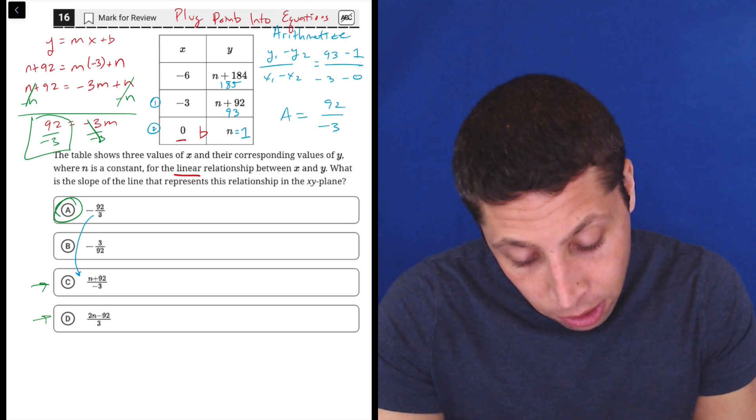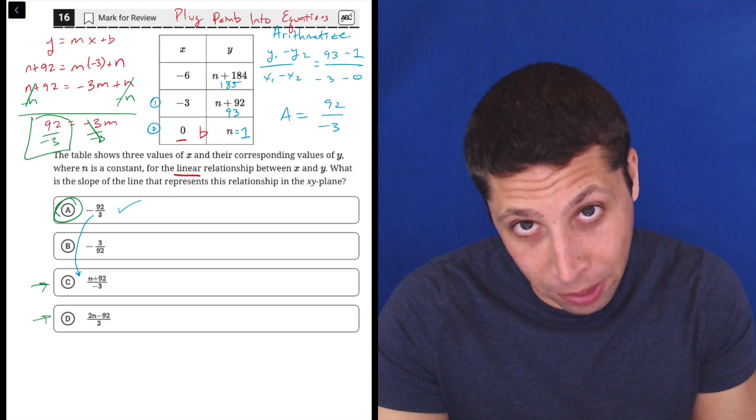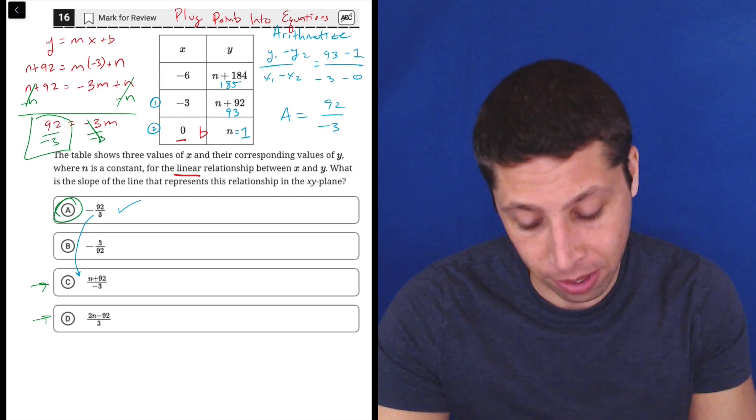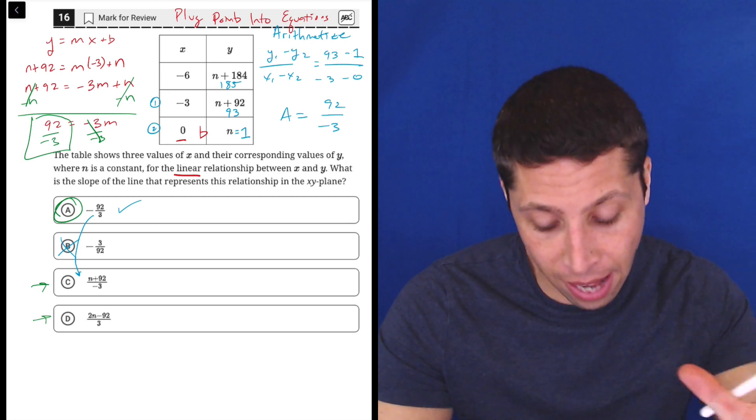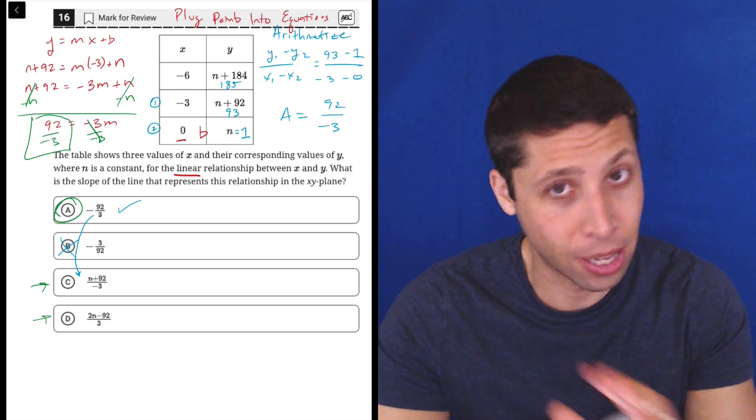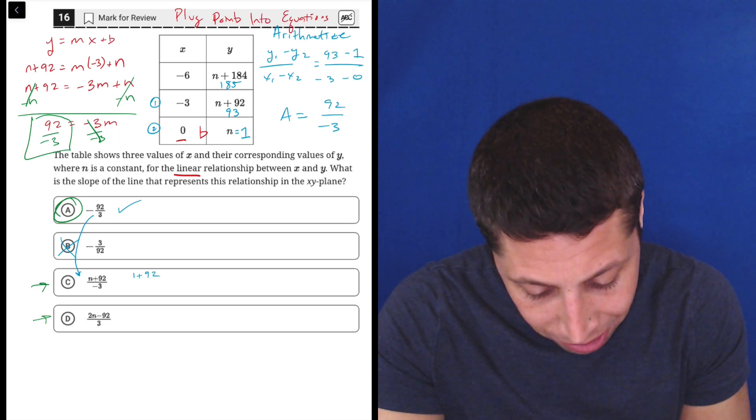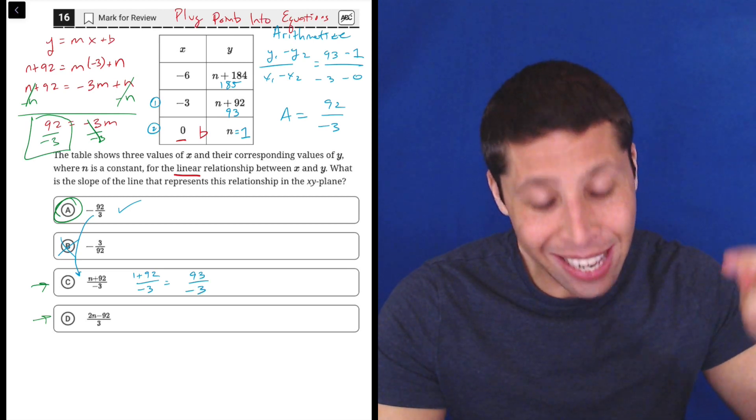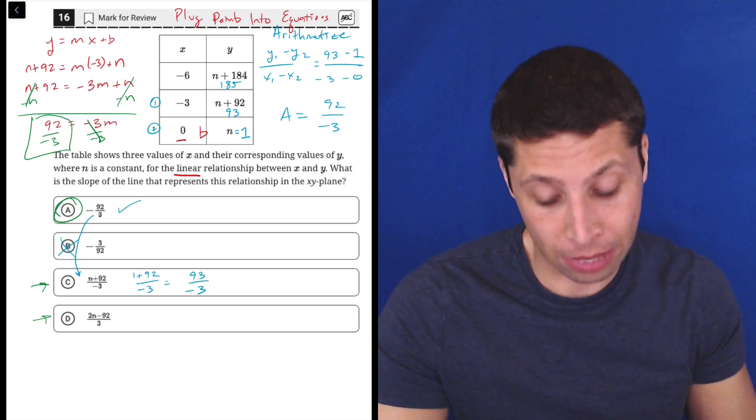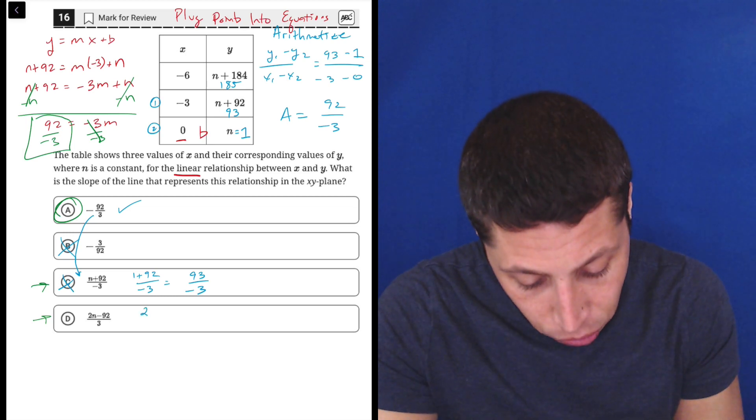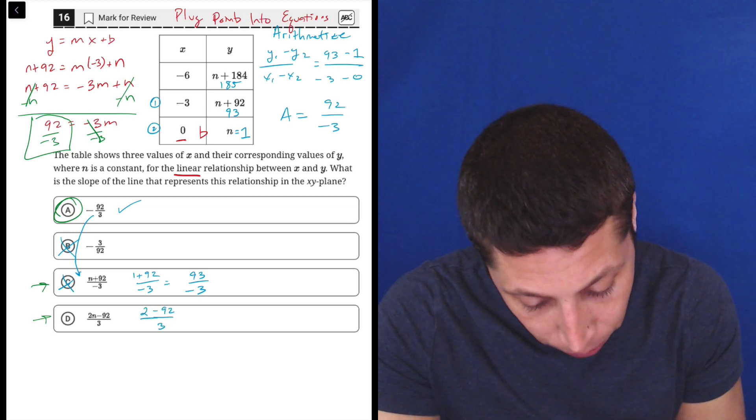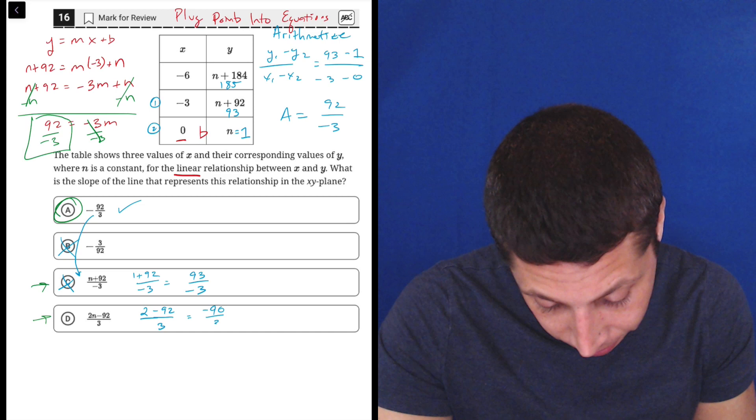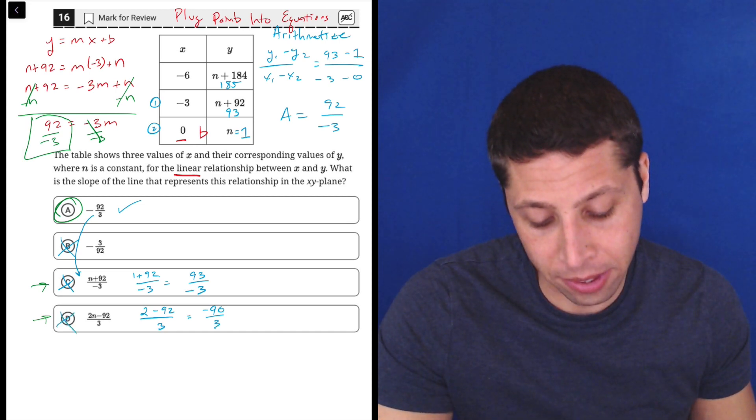Now we would still need to check the other choices and make sure because if we made N 1, then we need to make all the Ns 1, including the Ns and the answer choices. Now B does not have an N. So that we already can see is wrong because that's not the same. 3 over 92 or negative 3 over 92 is different. So that's wrong. If we plug 1 in for choice C, we'd be close, but it's not quite the same. That's 93 divided by negative 3. That's not the same as 92 divided by negative 3. It's close, but it's not quite the same. Here we'd have 2 minus 92 over 3. So 2 times 1, N is 1. So that's negative 90 over 3. And again, it's close, but not quite the same. So that's wrong too.